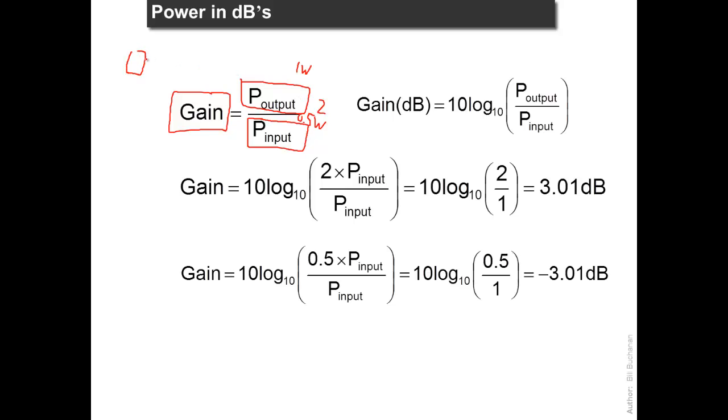Normally when we take a system and its elements with gain we have to multiply each of the elements together. And that can be quite a difficult calculation.